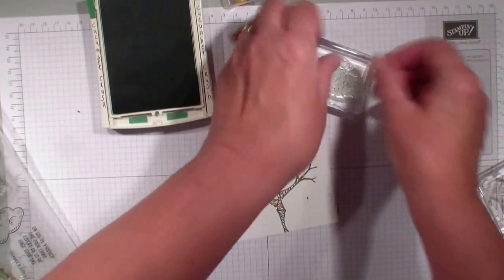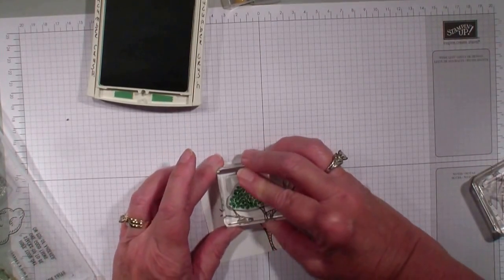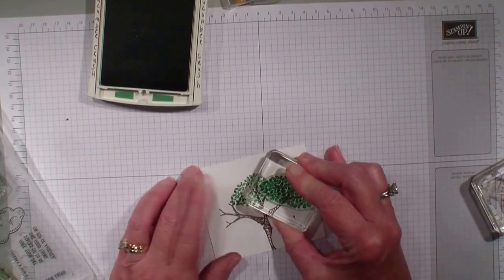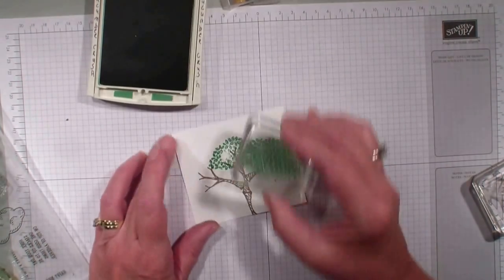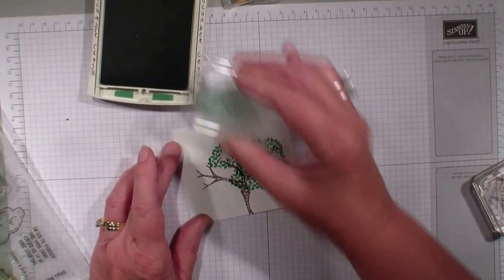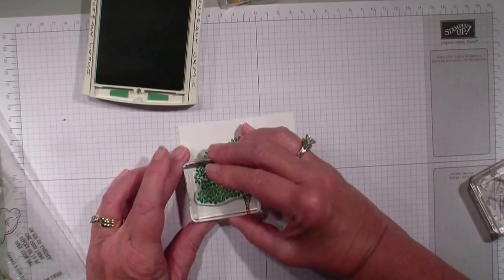I am going to put the leaves on and I am going to ink that stamp and I am going to stamp it several times just overlapping one another until I fill that bigger tree up.